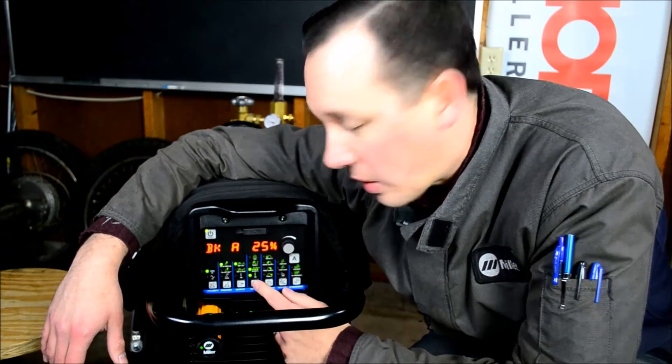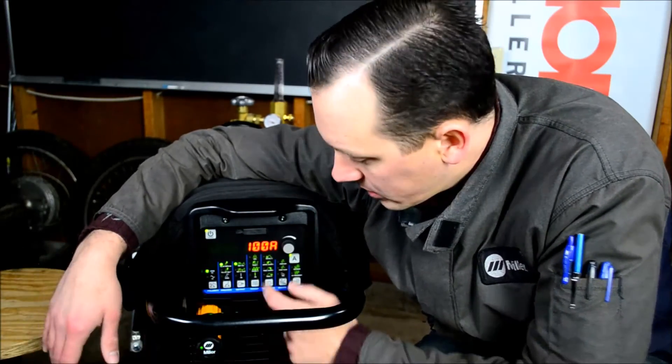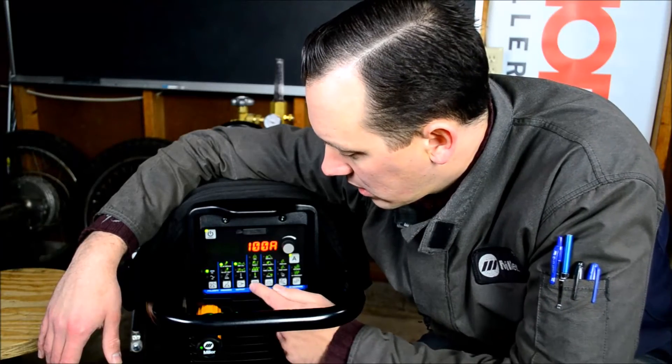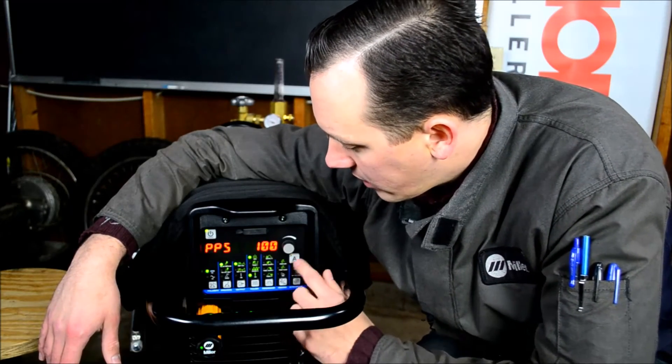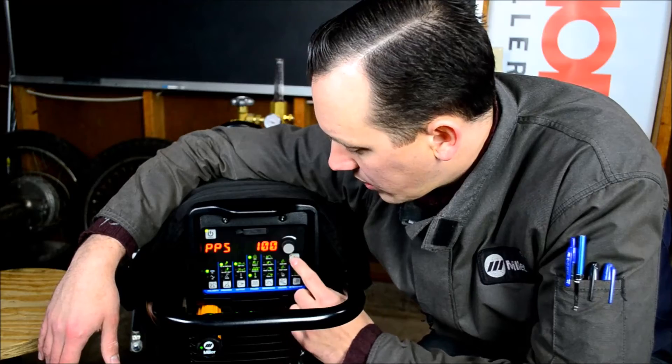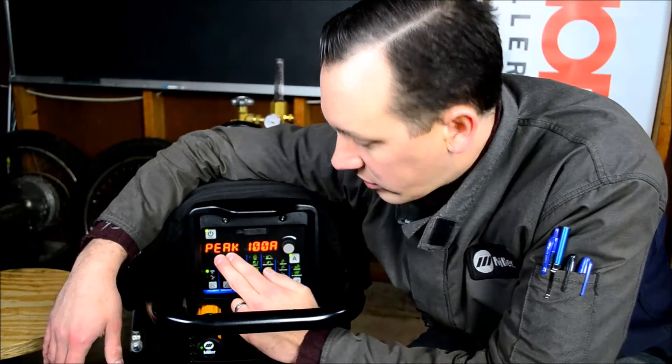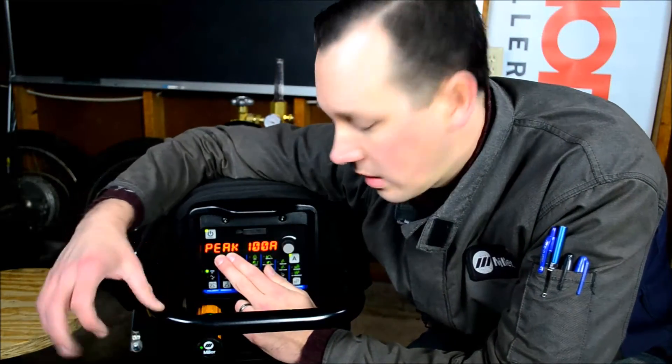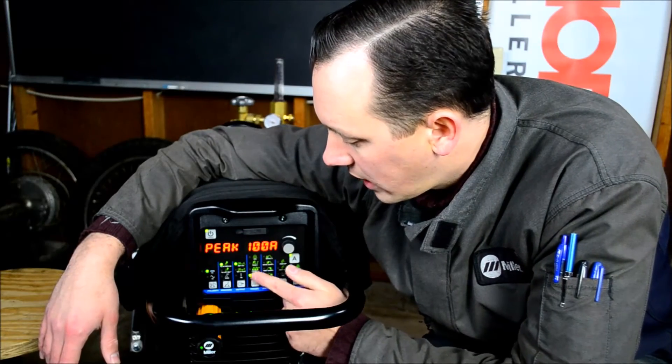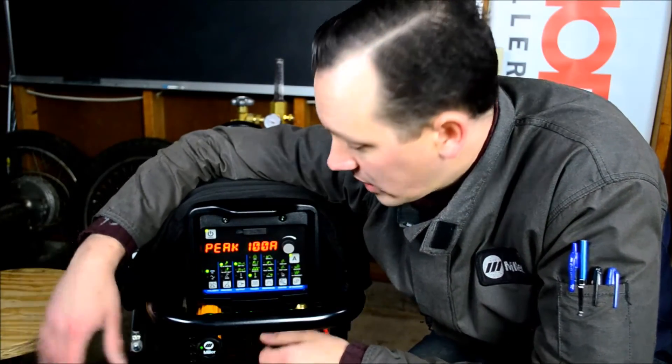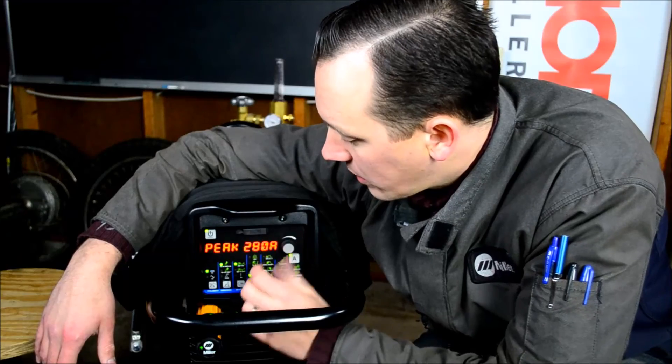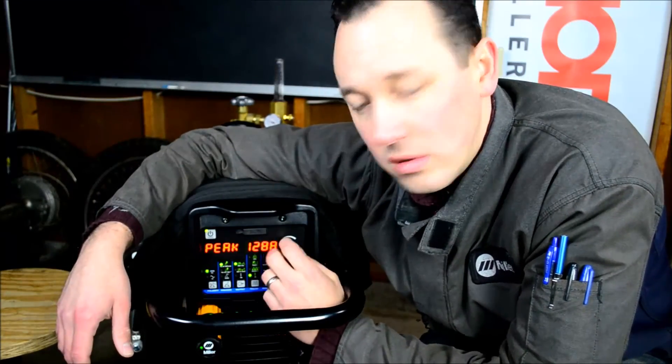Now if I hit this pulser button one more time, pulsing is off. We're no longer enabled. The LED is not lit up next to on. So if I want to get out of this and control my peak, press amperage. And you see it says peak here. If it doesn't say peak, pulsing is not on. If the LED is not lit up next to on, pulsing is not on. So at this point, we can adjust our peak amperage and everything else will scale accordingly.